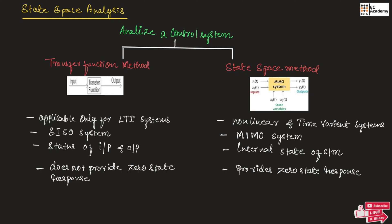The state space method is applicable for non-linear and time-variant systems. It can have multiple input and multiple output. This system can take multiple inputs and provide multiple outputs. It provides the internal state of the system along with the status of input and output. Internal status of the system can also be understood along with the status of input as well as output. It also provides zero state response, which is one of the major advantages of this method.